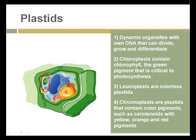Plastids are the organelles that hold chlorophyll — the green pigment that is critical to photosynthesis. There are other kinds of plastids: leukoplasts are colorless, and chromoplasts contain other colors such as yellow, orange, and red pigments. These are found in varying numbers in different parts of the plant. In the leaves, chloroplasts are very numerous and conduct the photosynthesis that sustains and feeds the plant.